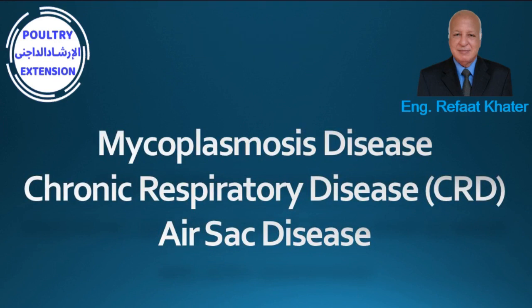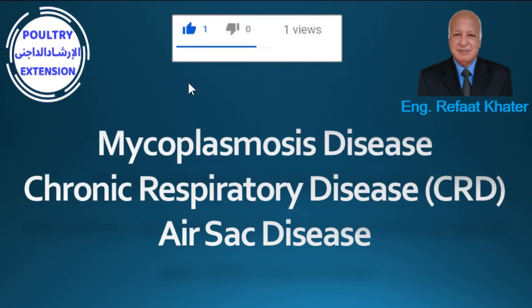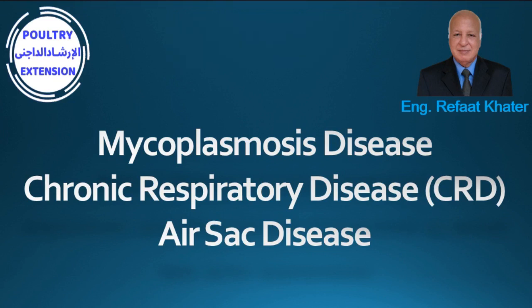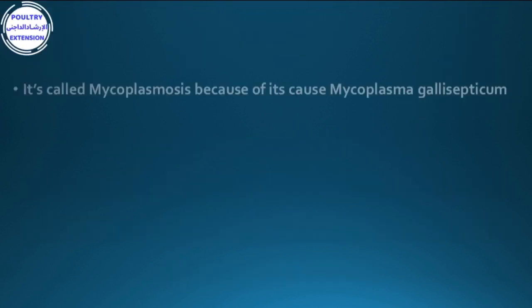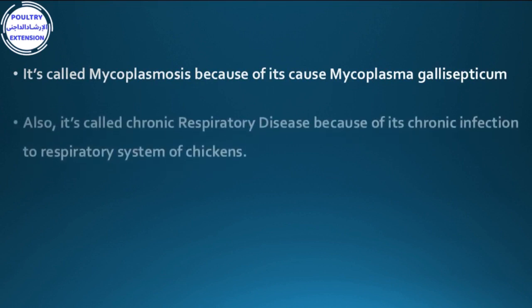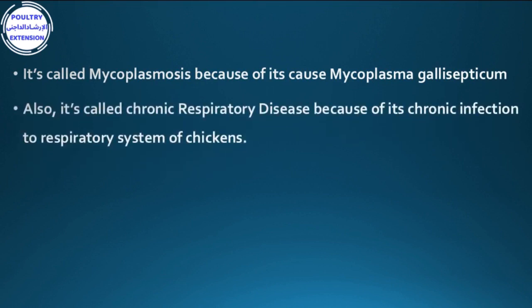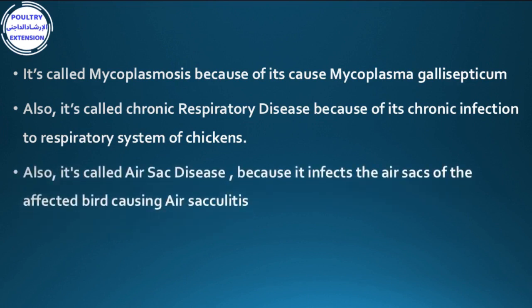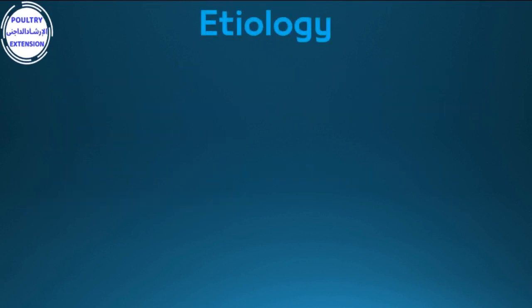The disease is mycoplasmosis, also called chronic respiratory disease (CRD) and air sac disease. It is called mycoplasmosis because of its cause, Mycoplasma gallisepticum; chronic respiratory disease because of its chronic infection to the respiratory system of chickens; and air sac disease because it infects the air sacs of affected birds, causing air sacculitis.